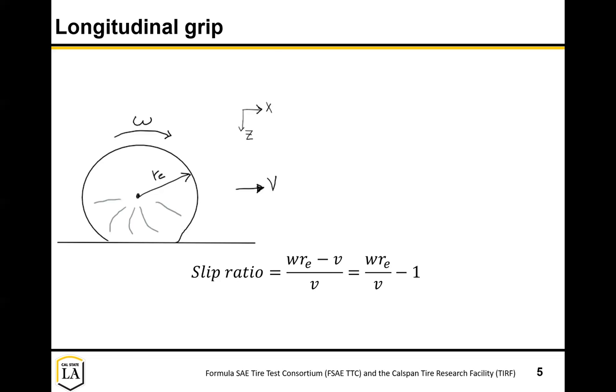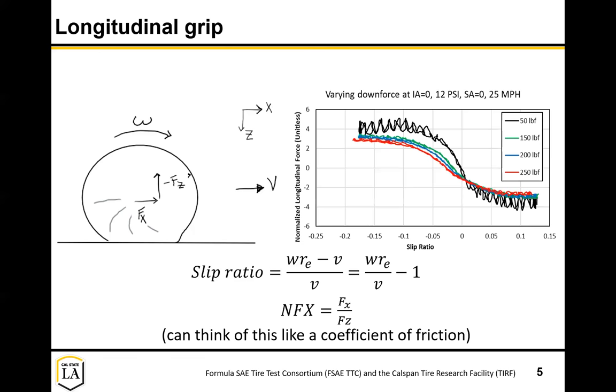If it was rotating at exactly the speed you would expect, this term would be zero and your slip ratio would be zero. The slip ratio just normalizes this by the velocity, and you can also talk about it as a percent. The higher this number is, the more the tire is deforming and the harder it is working to propel you forward. You'll have a larger FX. FX is pushing you forward and we'll normally normalize this by the downforce.